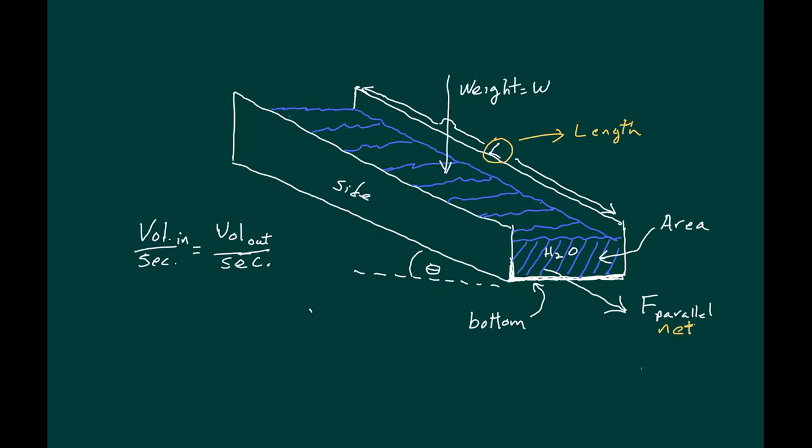This is a perspective view of the rain gutter with theta the angle of inclination. The weight is always pulling down on the water perpendicular to the surface of the earth. This is the force which is a component of the weight that drives the water down the rain gutter. Sometimes referred to as force subparallel or force subnet. And it's important that the volume in is the same as the volume out. In other words, it doesn't lose any water or gain any in this section.